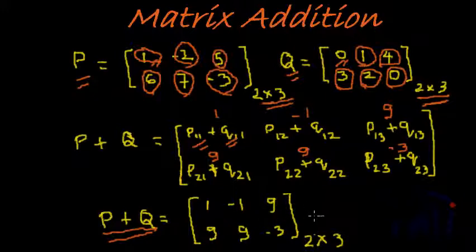The point to observe is the resultant matrix is of the same order as the original matrices. So if P and Q are 2 by 3, you will get a 2 by 3 matrix as an answer. This is how we add.